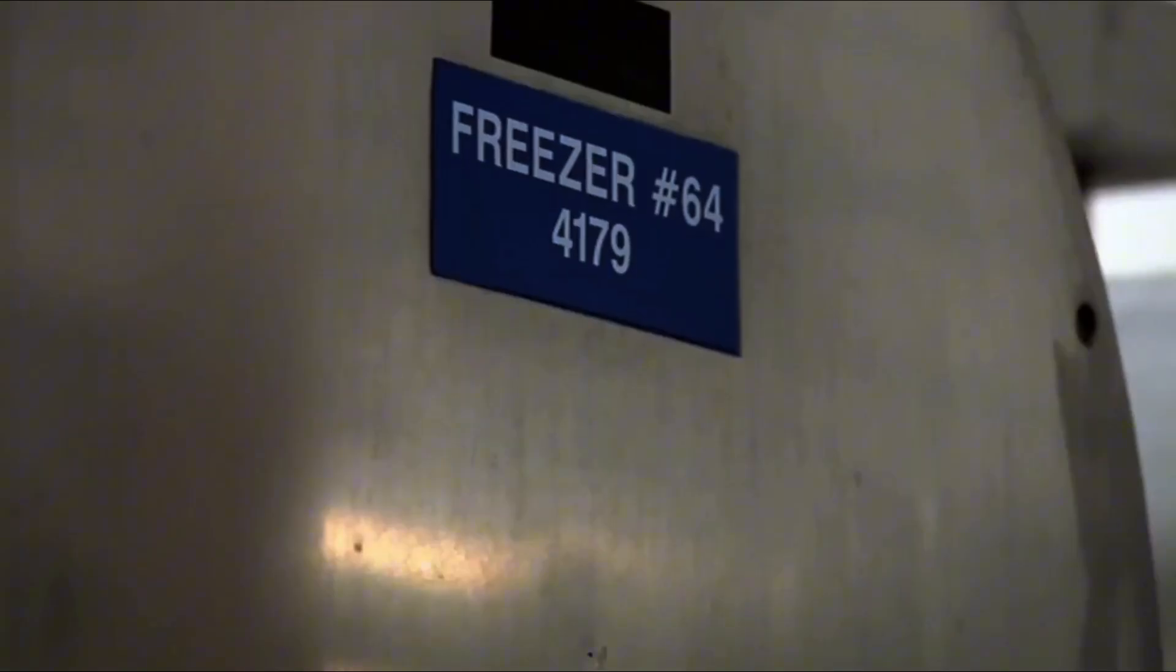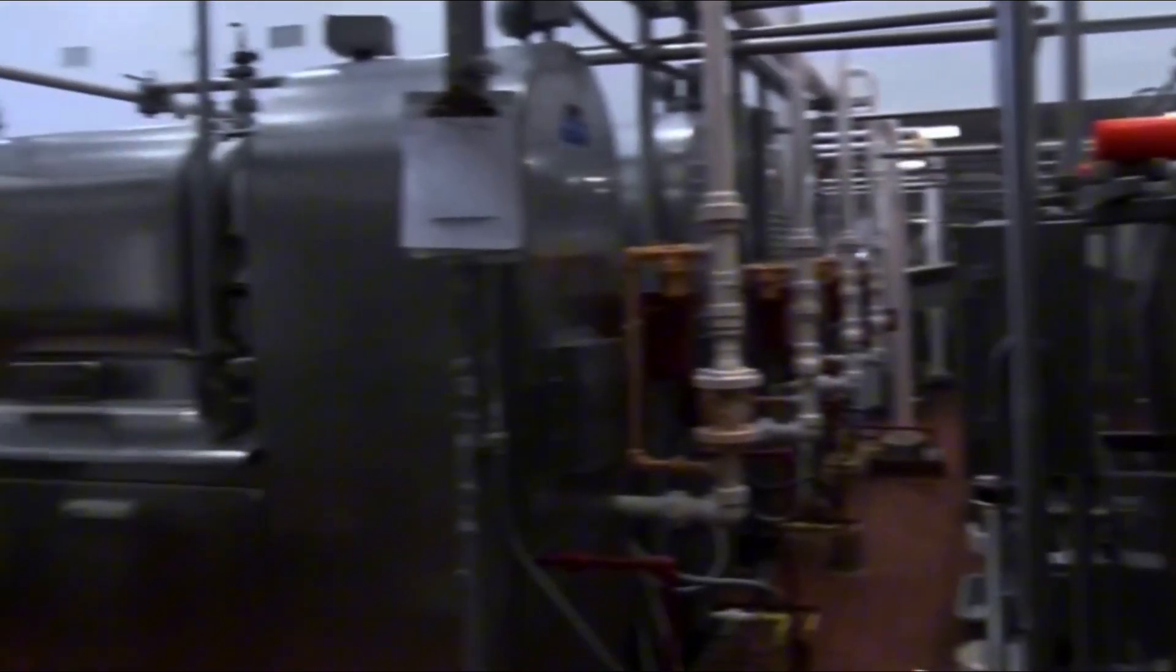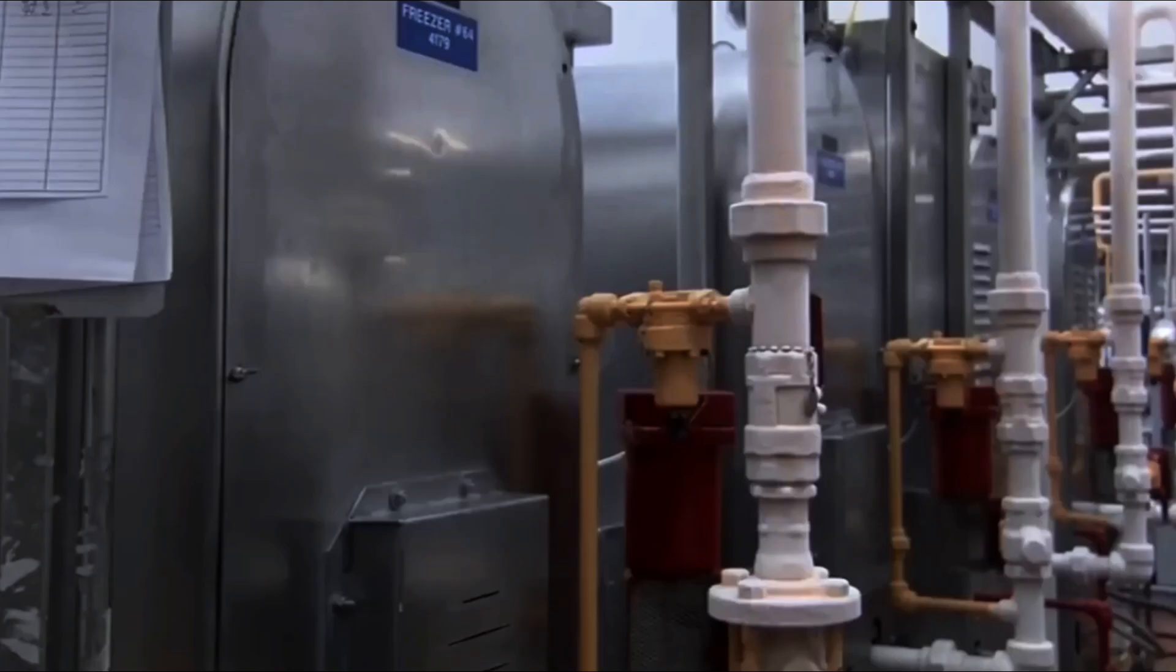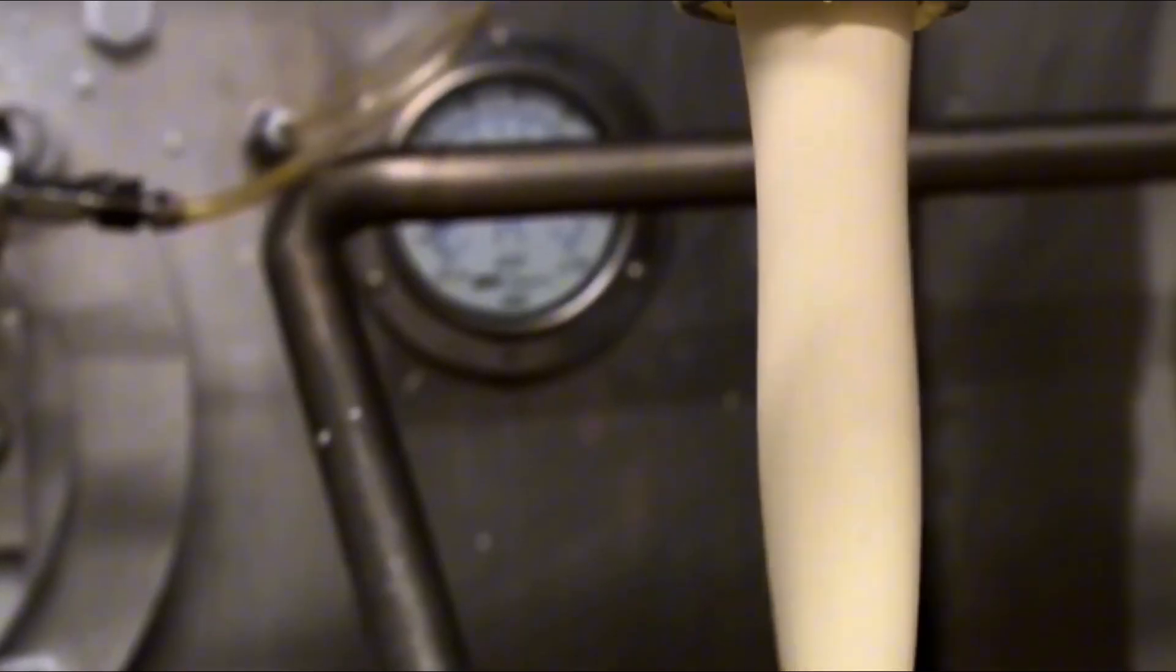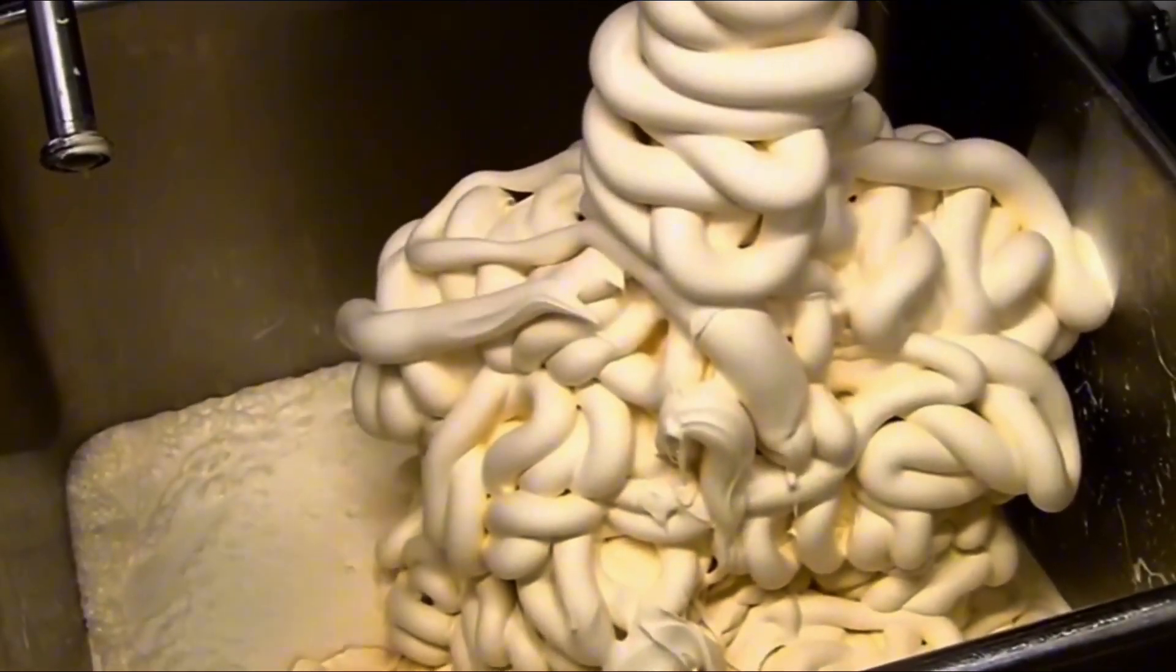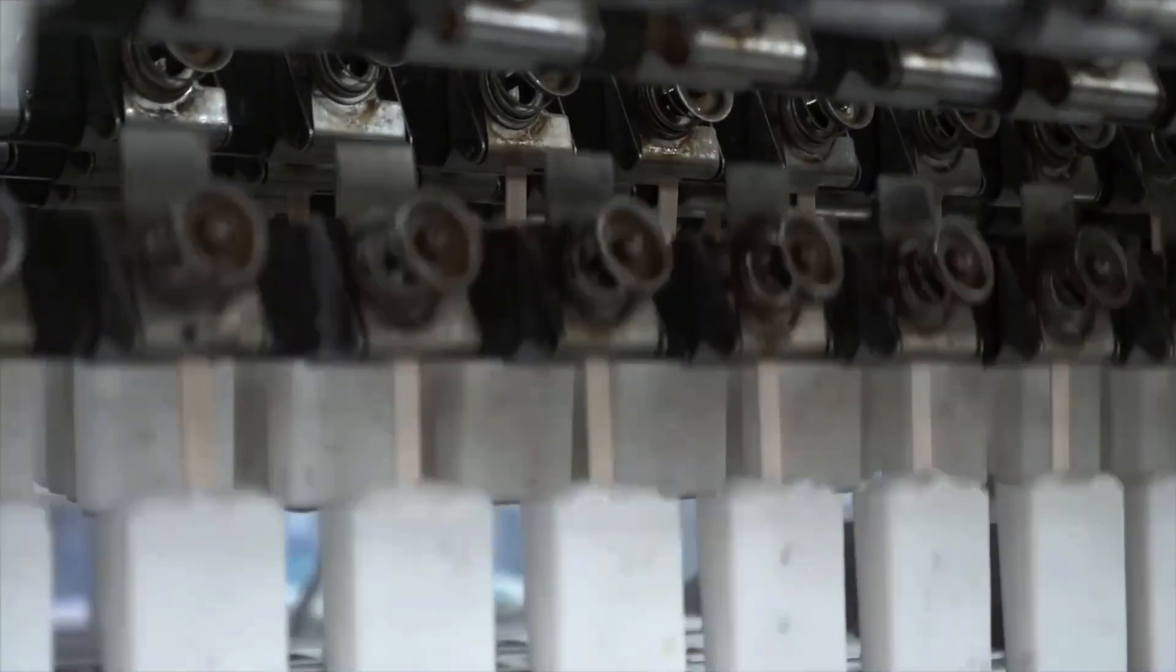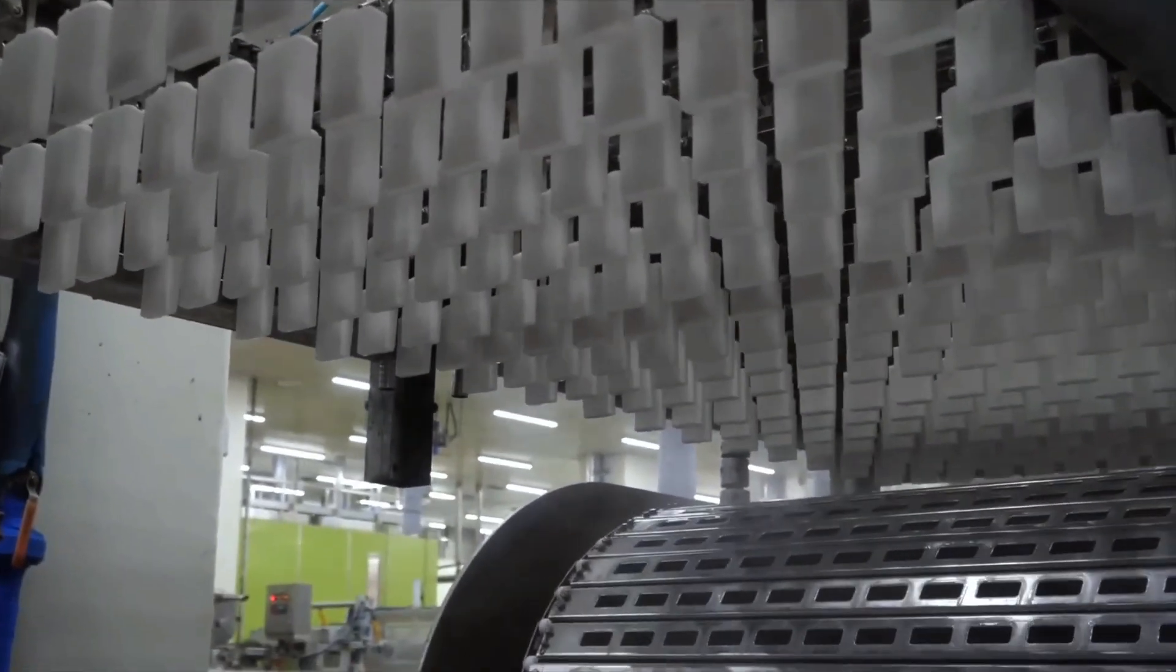At last, everything is ready for the most exciting stage, turning liquid into ice cream. The base enters industrial freezers, where it starts to freeze while being continuously churned. This is where true craftsmanship comes in. The process must be quick, but not too aggressive. Freeze too slowly, and large ice crystals form. Freeze too fast, and air and inclusions won't properly integrate.